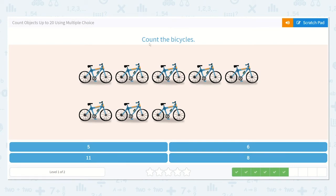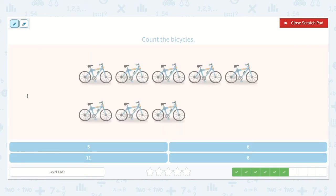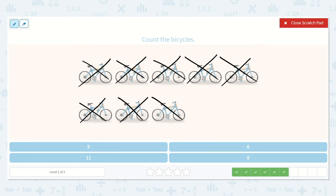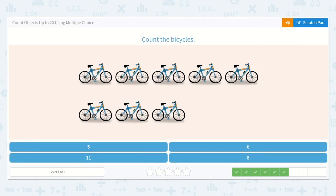Now let's count the bicycles. I'm going to cross these off as I count. One, two, three, four, five, six, seven, eight. Great. There are eight bicycles. And I see the eight down below. Do you? Yep, right here.